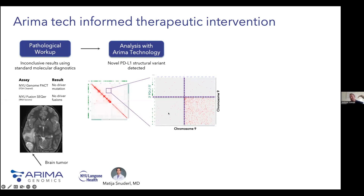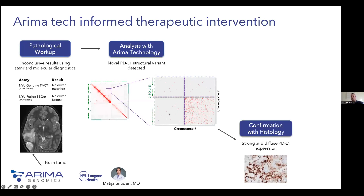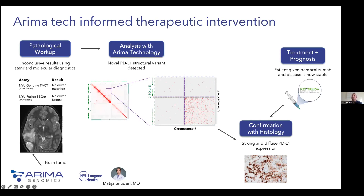Based on this result, we wanted to see if the protein was expressed on the surface of these tumor cells — and in fact it was. This immunohistochemistry test would not have routinely been done in a pediatric brain tumor case because the diagnostic yield is so low, but this finding from Hi-C triggered the IHC analysis. Ultimately, the patient was put on immunotherapy about nine or ten months ago and still has stable disease with no tumor progression.